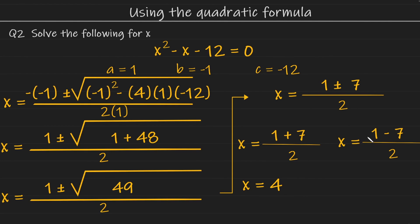And the other solution is going to be 1 minus 7, which is negative 6. And negative 6 divided by 2 is negative 3. And this is our other solution.